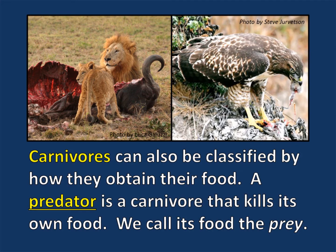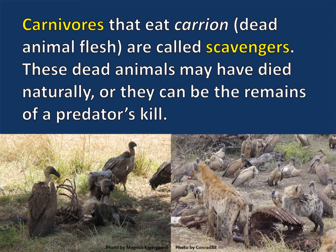Carnivores can also be classified by how they obtain their food. A predator is a carnivore that kills its own food; we call its food the prey. Carnivores that eat carrion, or dead animal flesh, are called scavengers. These dead animals may have died naturally, or they can be the remains of a predator's kill.